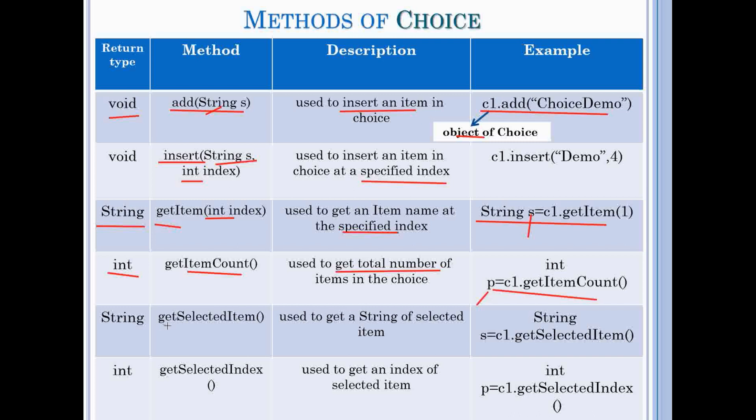Fifth method is getSelectedItem which returns string value and is used to get string of selected item and this can be used like this. Here we store result in string object.